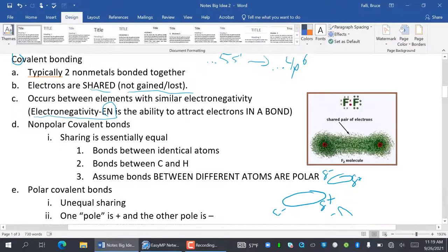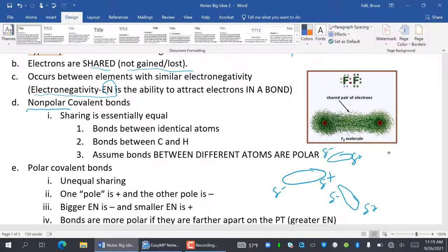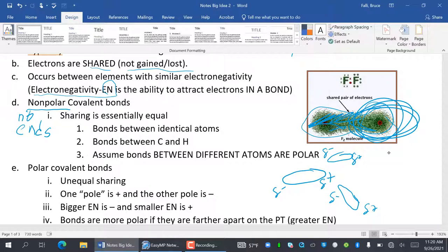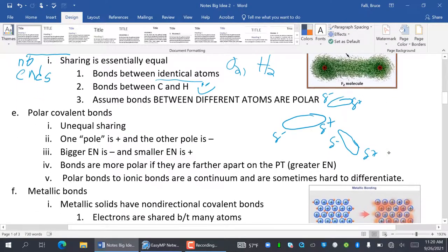So non-polar covalent bonds. So there's two types of covalent. First one is non-polar. Poles means ends. So non-polar means no ends. So the sharing is equal. So see how these electrons are shared evenly. If they were polar instead of non-polar, you'd see if one of the electrons is over here, and this would be just the smallest of sections. So sharing is essentially equal. So it's bonds between identical atoms, O2, or H2. So any of the diatomics. And bonds between C and H. These are the only ones that you should expect to be non-polar. And we're going to assume different bonds between different atoms are always polar.